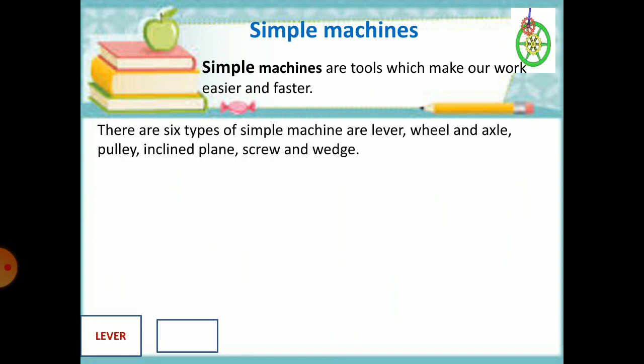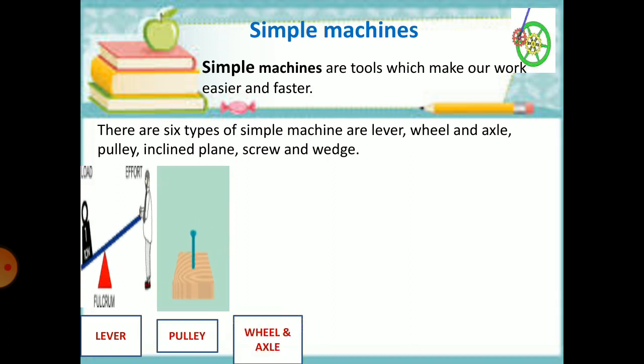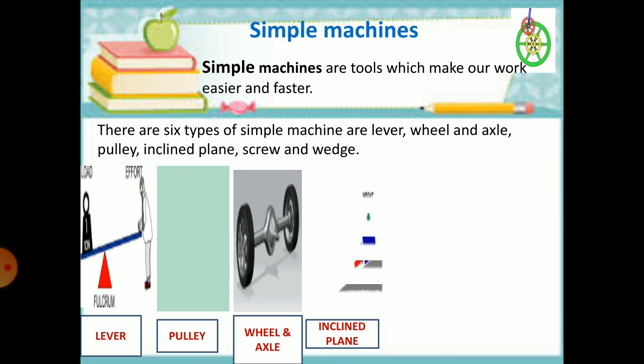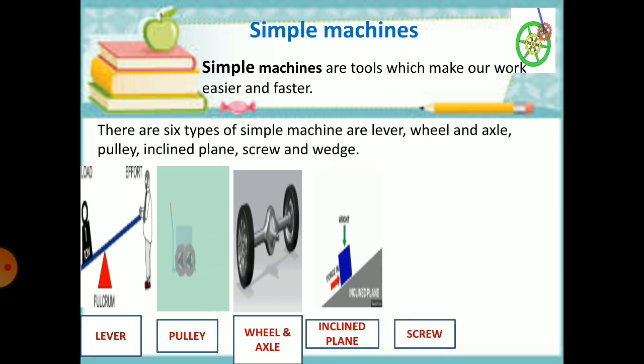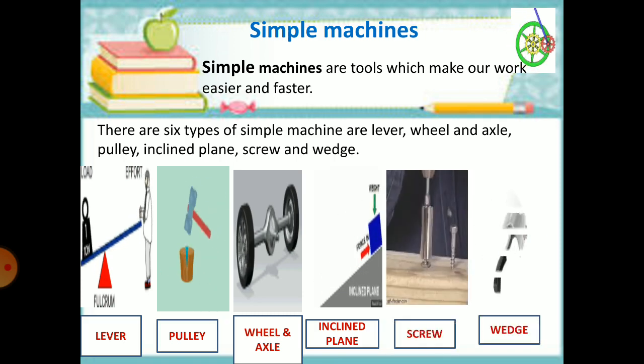There are six types of simple machines: lever, pulley, wheel and axle, incline plane, screw, and wedge.